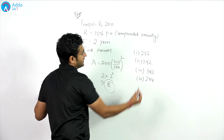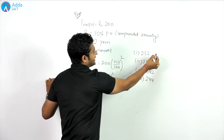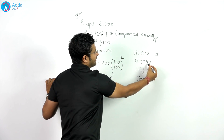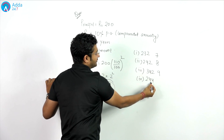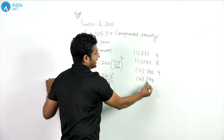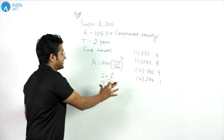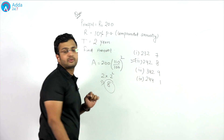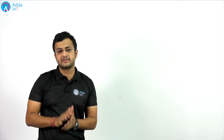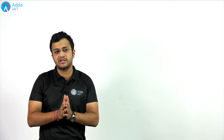Now let's check the options. The digital sum of the first option: 2 plus 2 is 4, plus 3 is 7. The second option: 2 plus 4 plus 2 is 8. The third option gives 9. The fourth option: 4 plus 4 is 8, plus 2 is 10, which means 1. The only option matching the digital sum of 8 is the second option, which is the required answer. This is how you can apply the concept of digital sum to compound interest questions and solve them without using a pen.